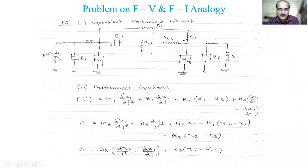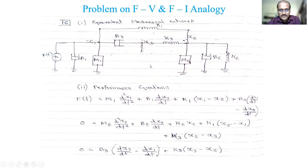At x1 you have m1, b1, and the force. Between x1 and x2 there is k1. Between x1 and x3 you have b3, and between x3 and x2 you have k3. At x2 you have m2, along with b2 and k2 in parallel. This is your equivalent mechanical network. From this, we apply Newton's law of motion to write the equilibrium equations.